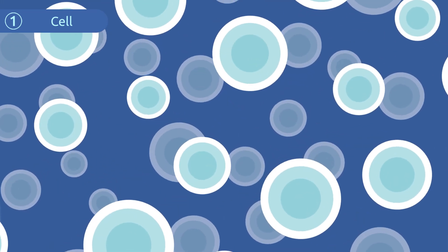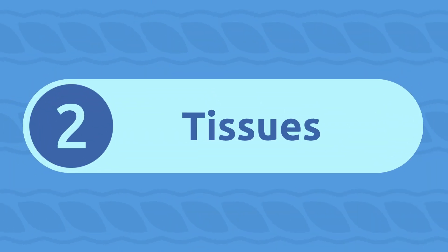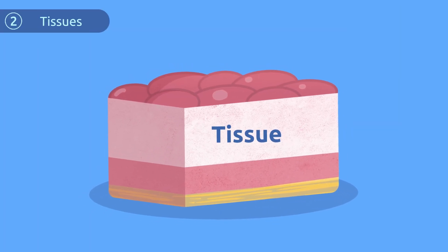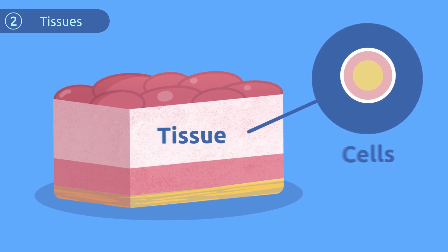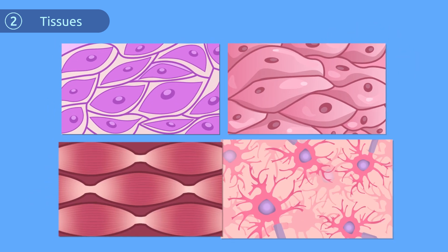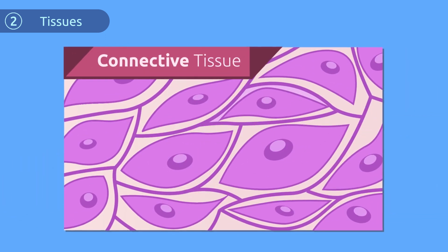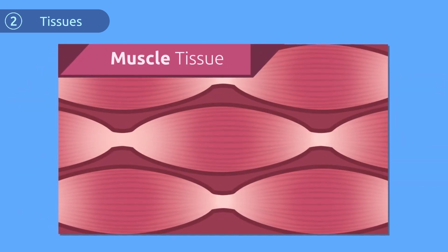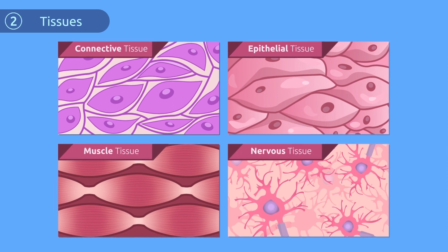Tissues are made up of the same types of cells that carry out the same function. There are four tissue types in our body: connective tissue, epithelial tissue, muscle tissue, and nervous tissue.